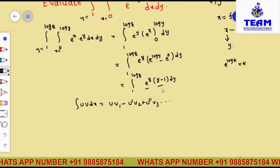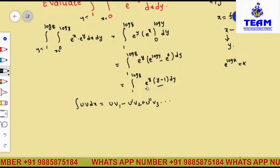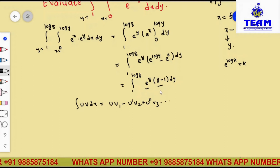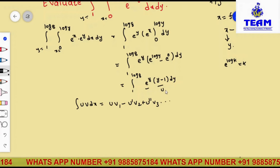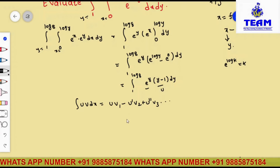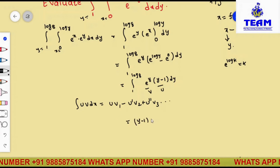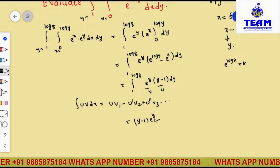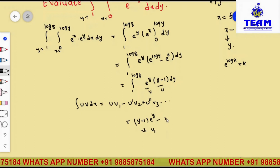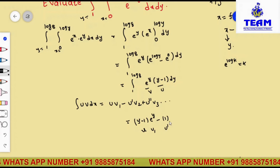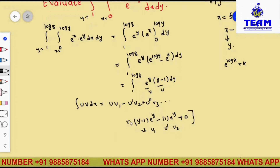So we take u = (y minus 1) — the algebraic function — and v = e to the power of y. Then u' = 1, u'' = 0, and v1 = e to the power of y, v2 = e to the power of y. Applying the formula: u·v1 minus u'·v2 = (y minus 1)·e to the power of y minus 1·e to the power of y. Since u'' = 0, no further terms are needed. Limits are from 1 to log 8.